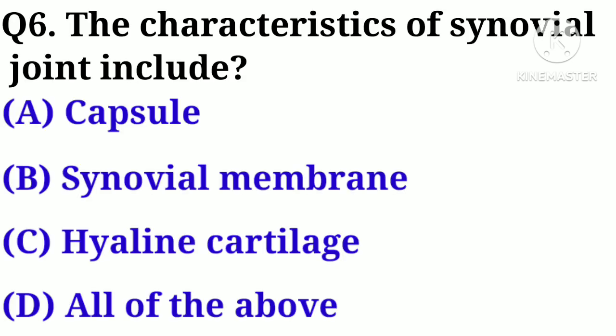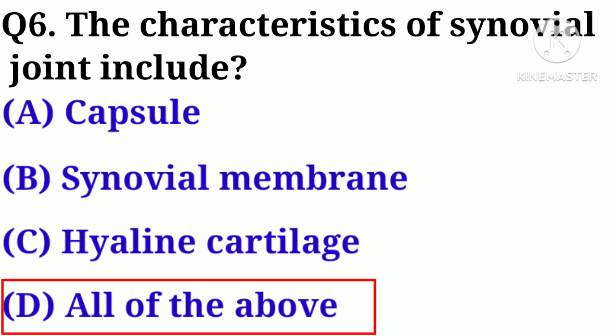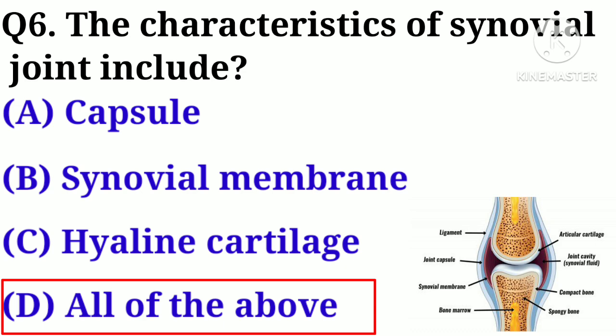Q6. The characteristics of a synovial joint include: A. Capsule, B. Synovial membrane, C. Hyaline cartilage, D. All of the above. Answer: D. All of the above.